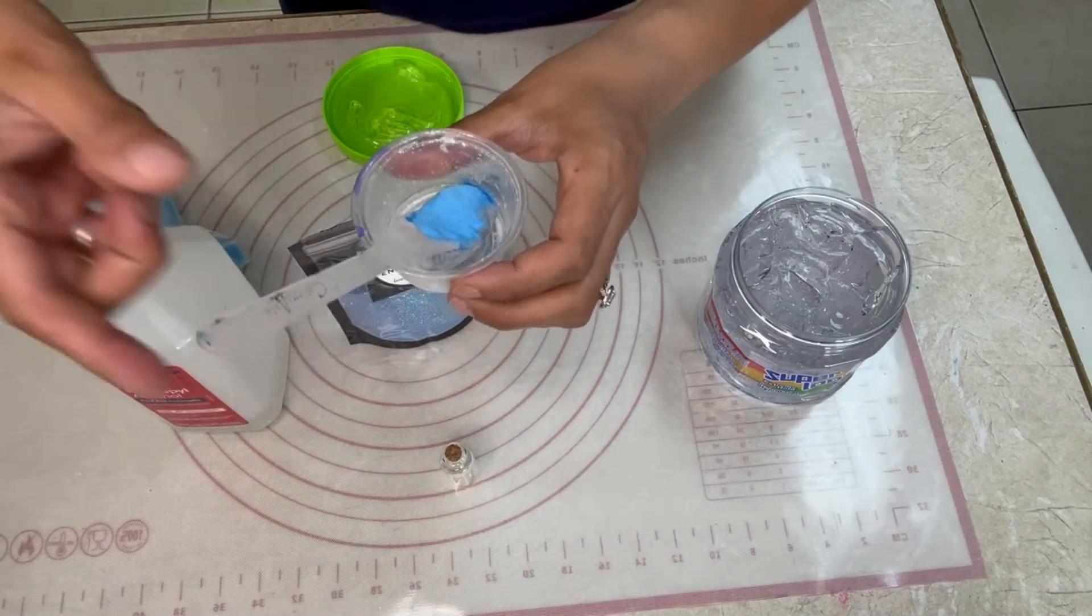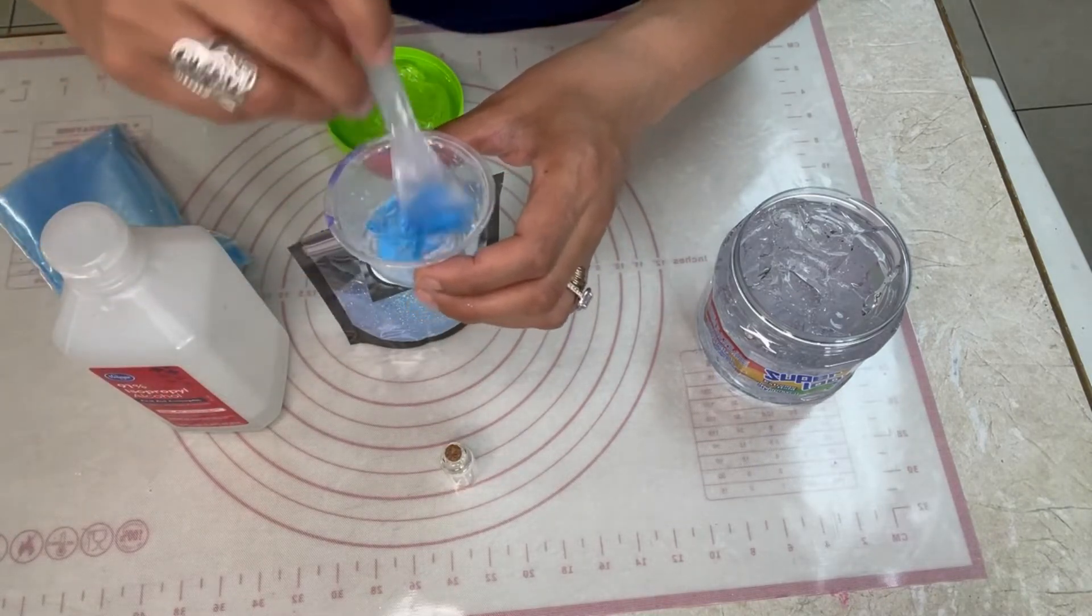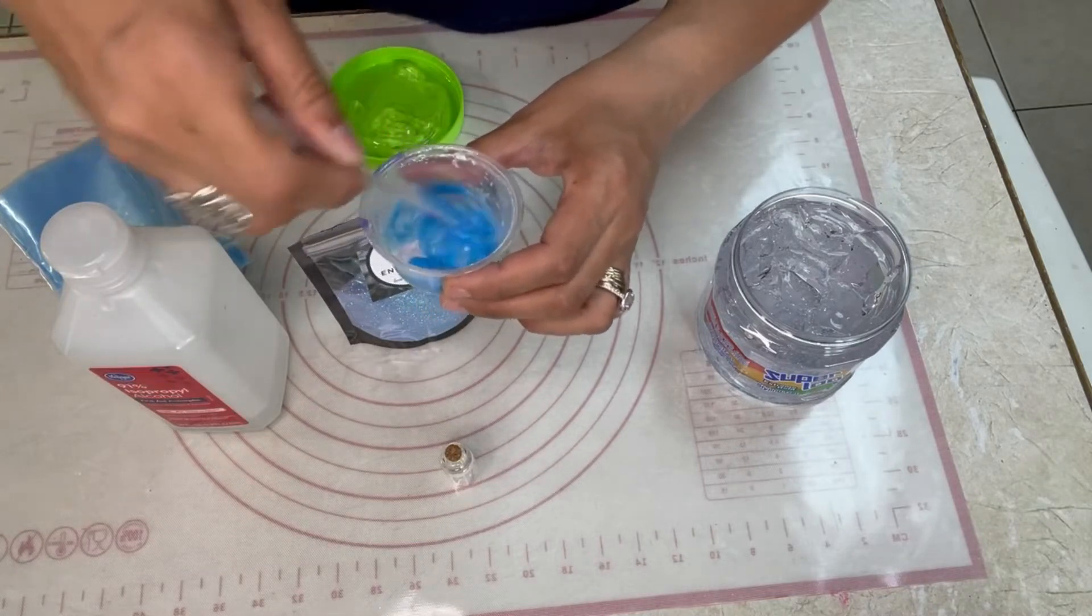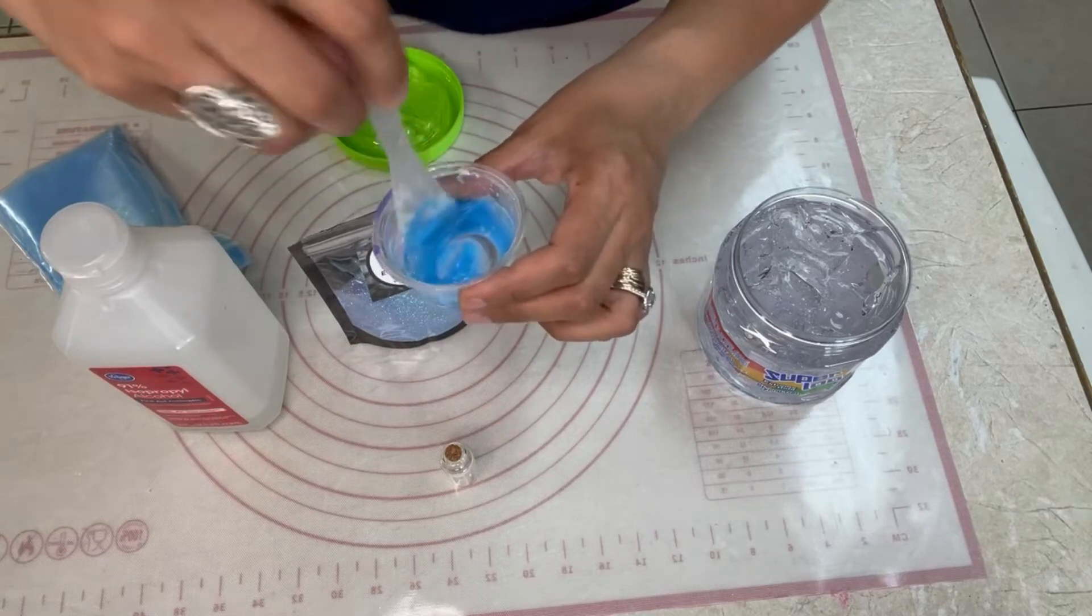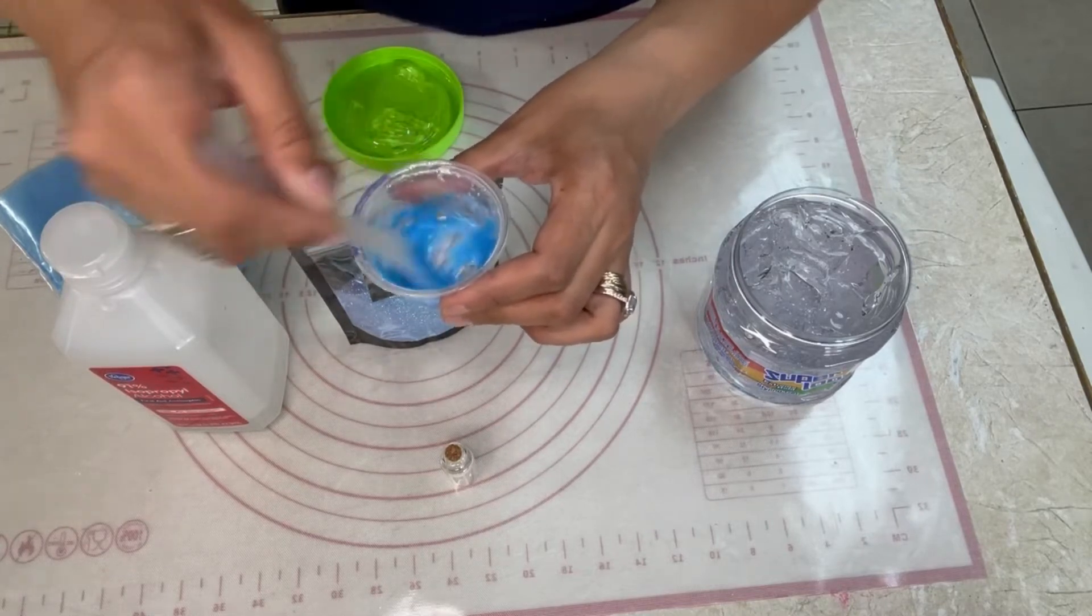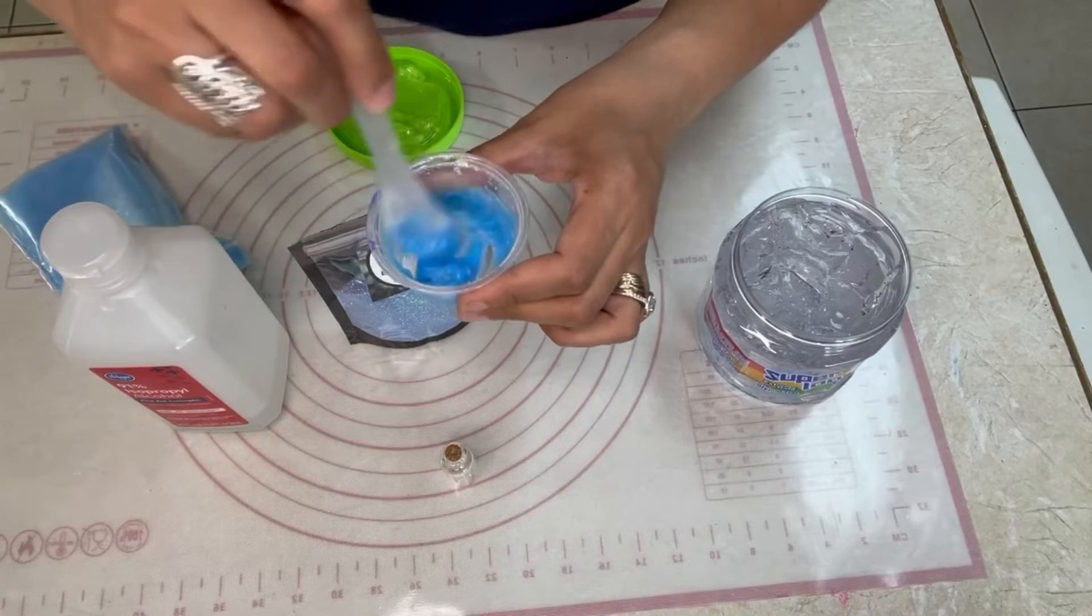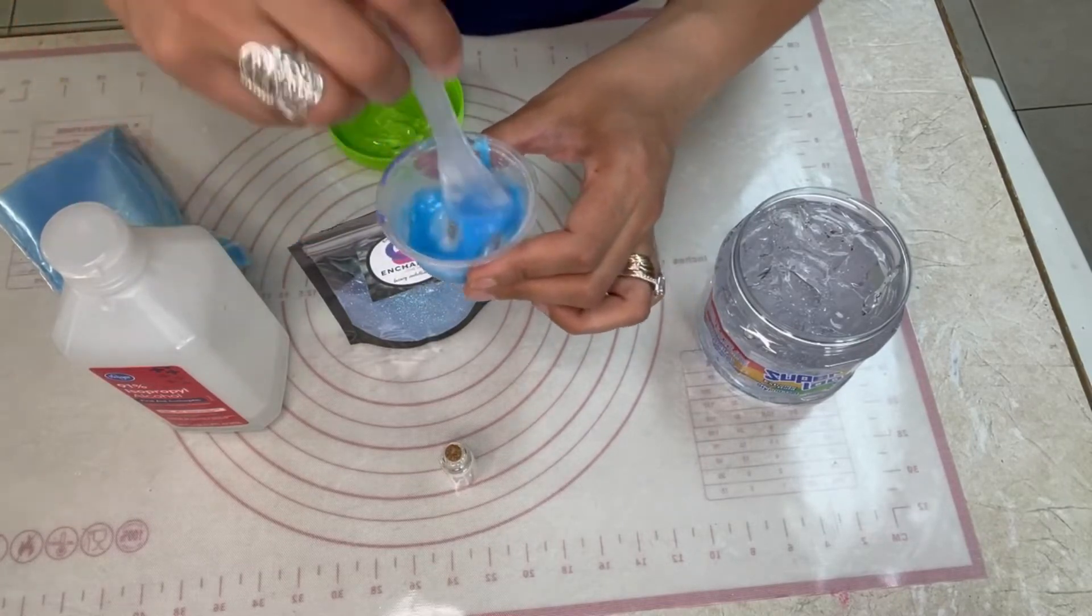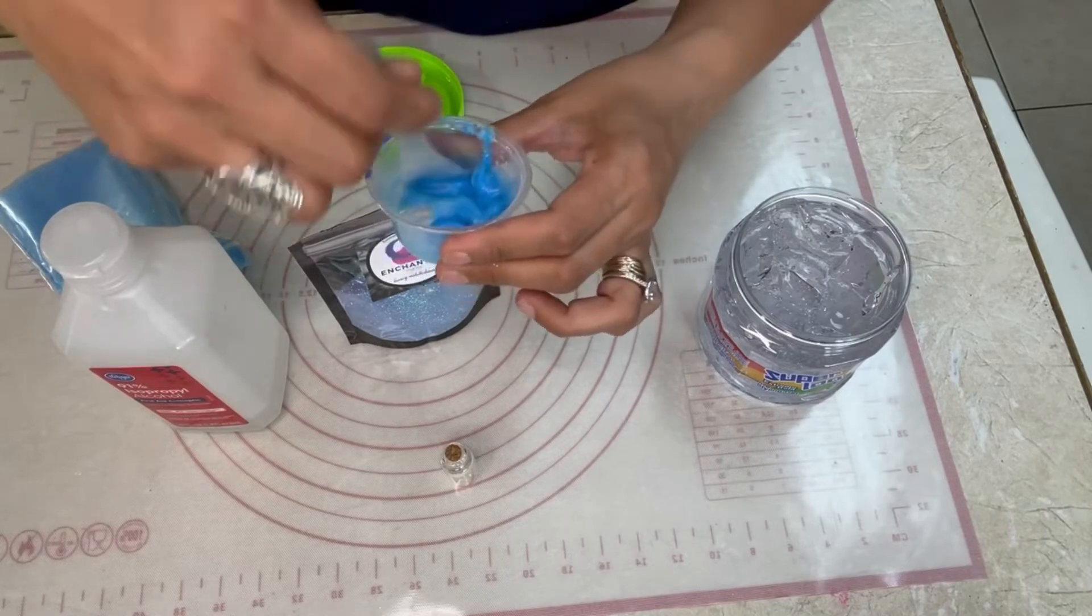One is to give it more of the brighter glow when the lights are turned off. And the Ipodex one is to give it that blue color without covering the glow in the dark properties. So, all you're going to do is just mix the powders into your hair gel.